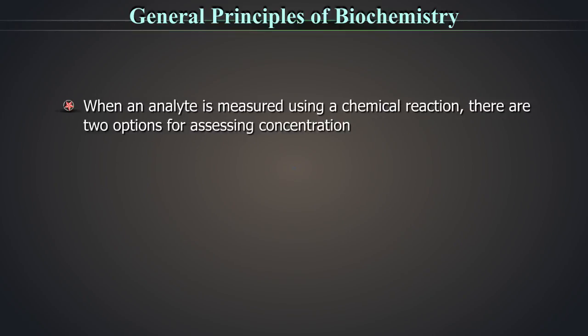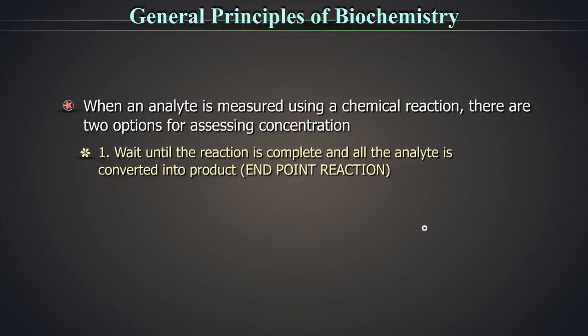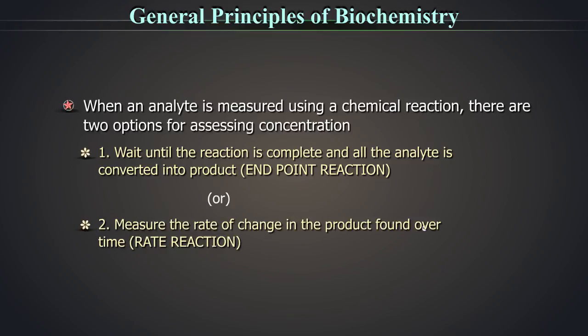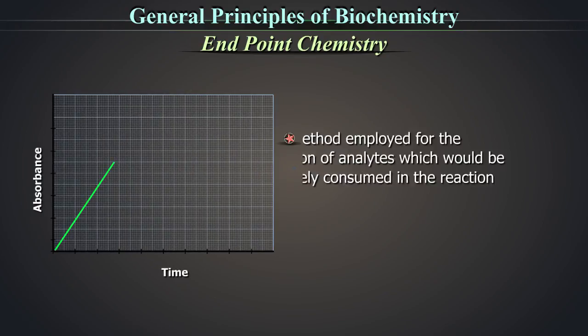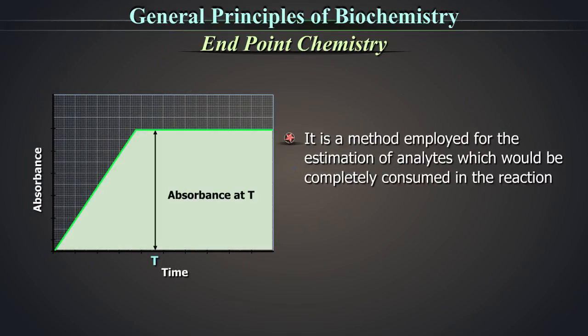When an analyte is measured using a chemical reaction, there are two options for assessing concentration. Wait until the reaction is complete and all of the analyte is converted into the product. This is called endpoint reaction. Or measure the rate of change in the product found over time. This is called rate reaction. Endpoint chemistry: a method employed for the estimation of analytes which would be completely consumed in the reaction. The endpoint for a particular analyte is normally achieved within 5-15 minutes at 37 degrees Celsius.